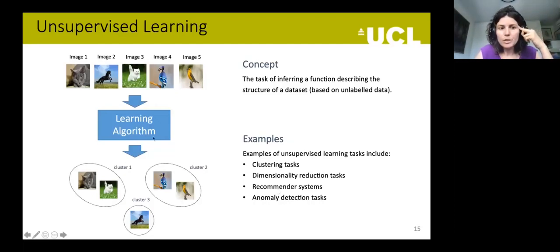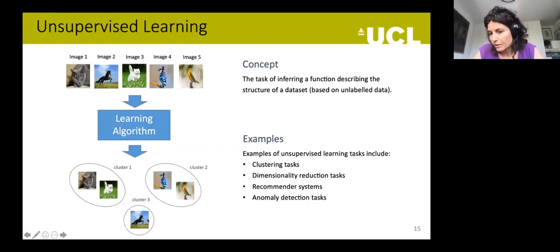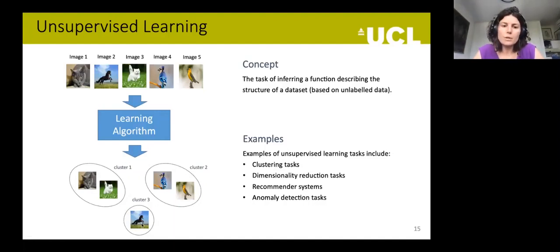Unsupervised learning is a more complicated task in which you have the input but not the labeled output. The only thing you can do is clustering algorithms — trying to see what images share common properties. It also covers dimensionality reduction, anomaly detection, and recommender systems. For example, if I always get cat images and then an image of a horse, I might detect that as an anomaly. This can be highly useful in network optimization for detecting jamming and adversarial attacks — more in the security aspect.